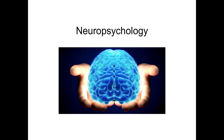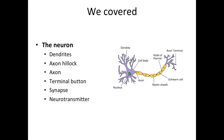Hi everyone and welcome back to neuropsychology. In the last video we covered all the parts of the neuron — the dendrites, the axon hillock, the beginning of the actual axon, the terminal buttons, the synapse, neurotransmitter, and a lot of other terms. If you have not watched that video yet, please go back and watch that before you watch this one.